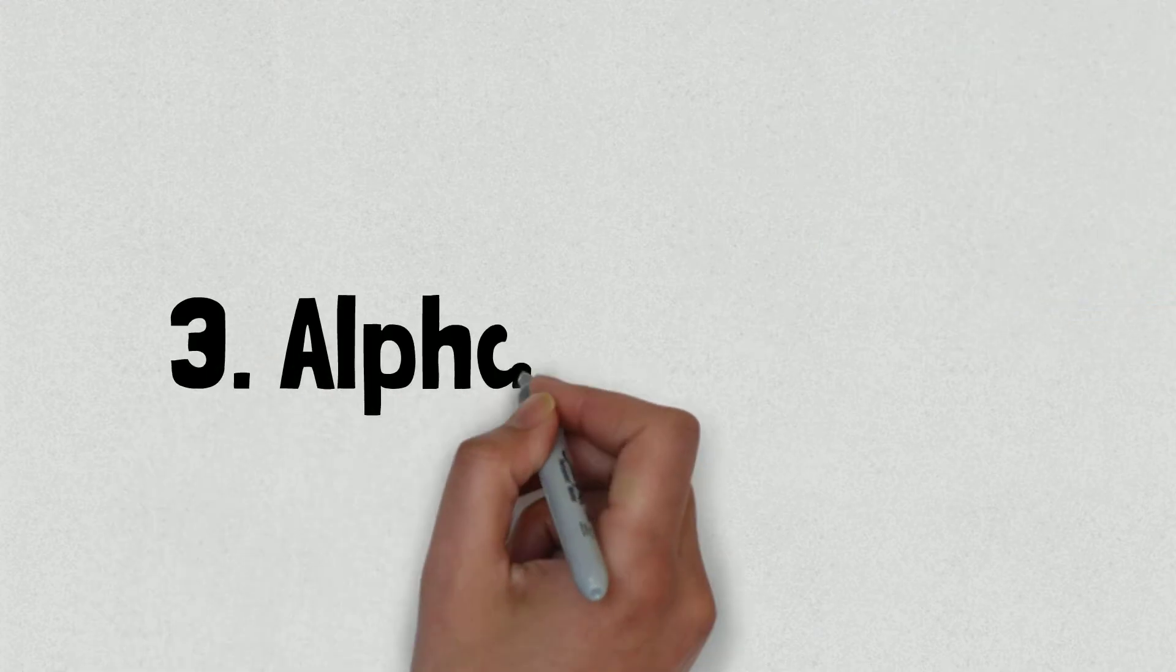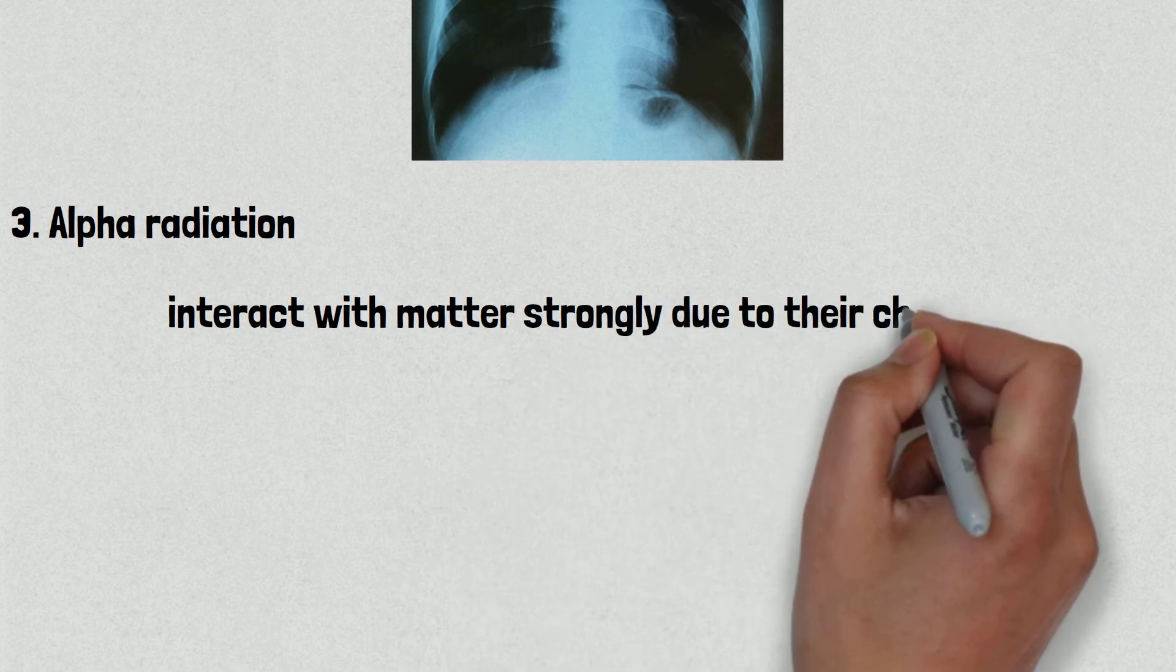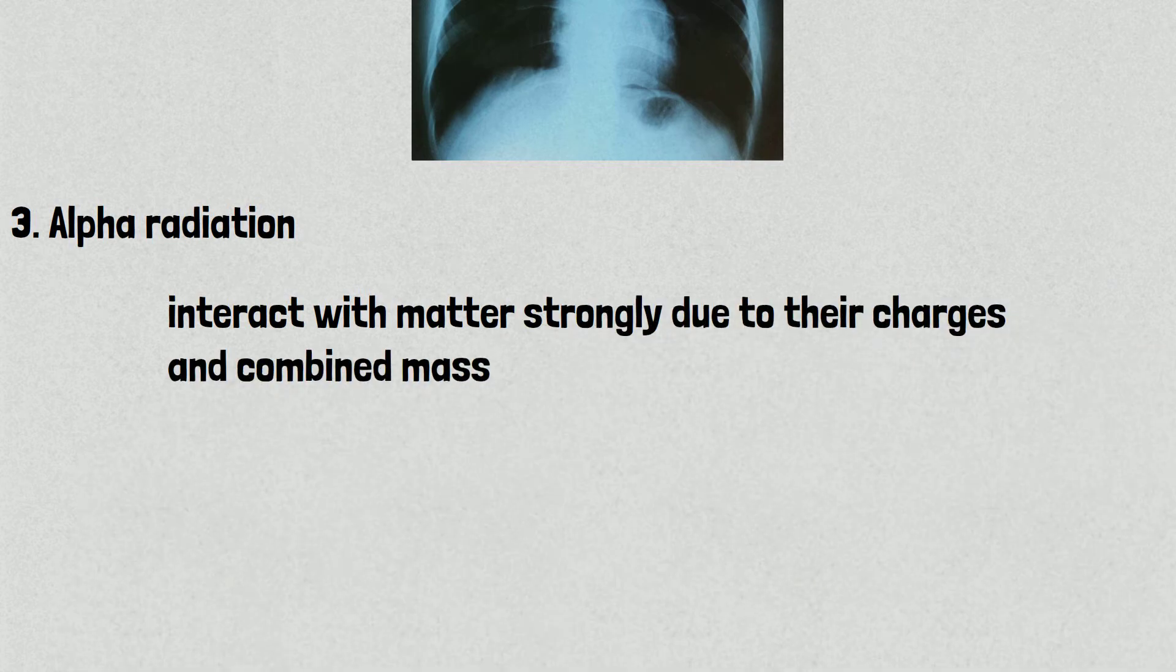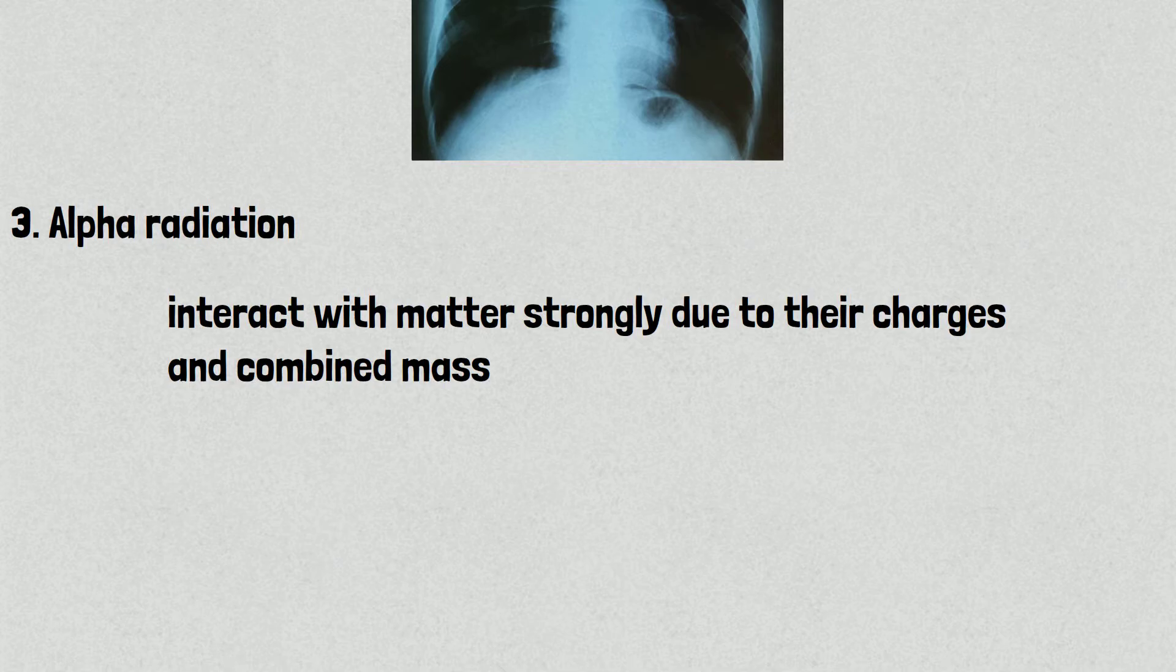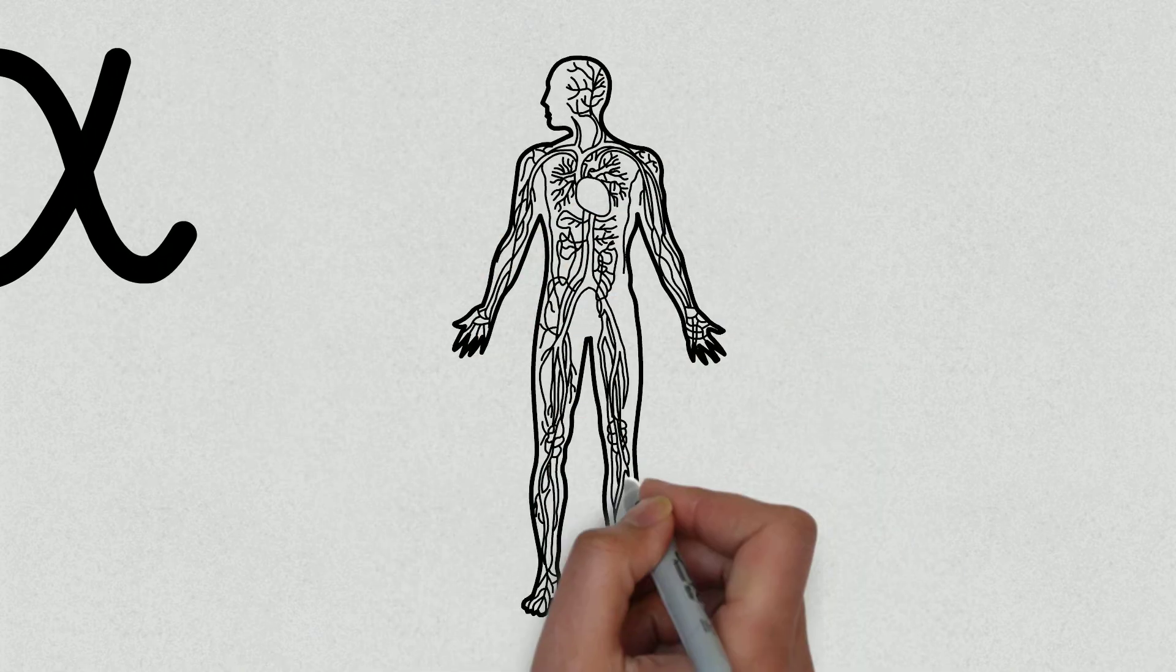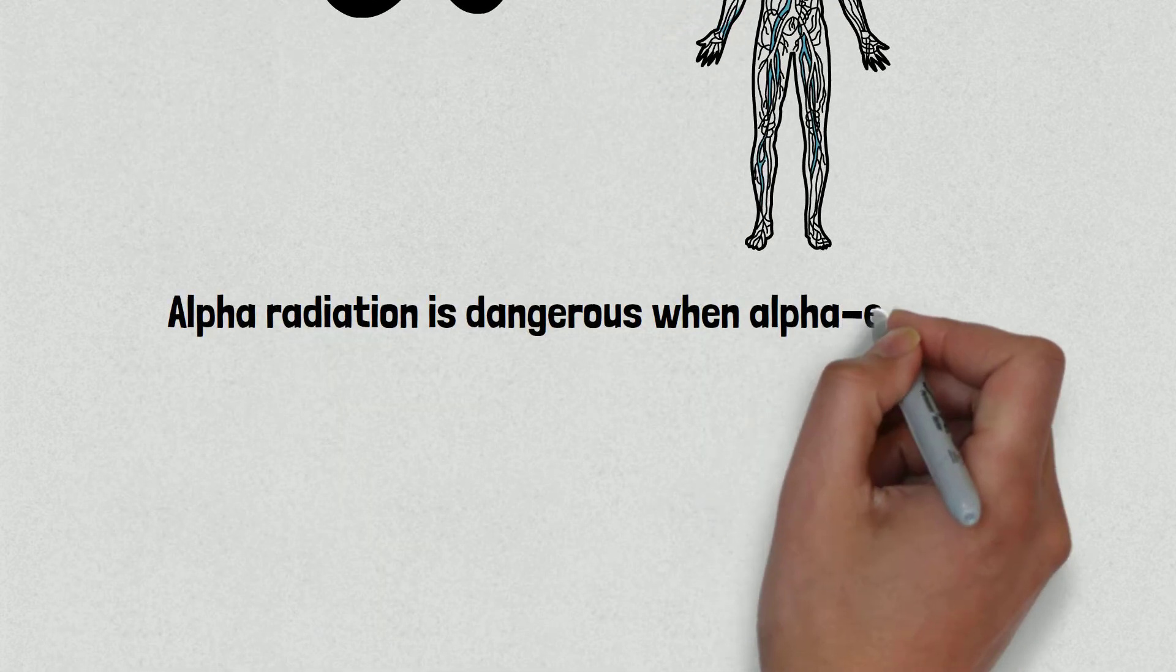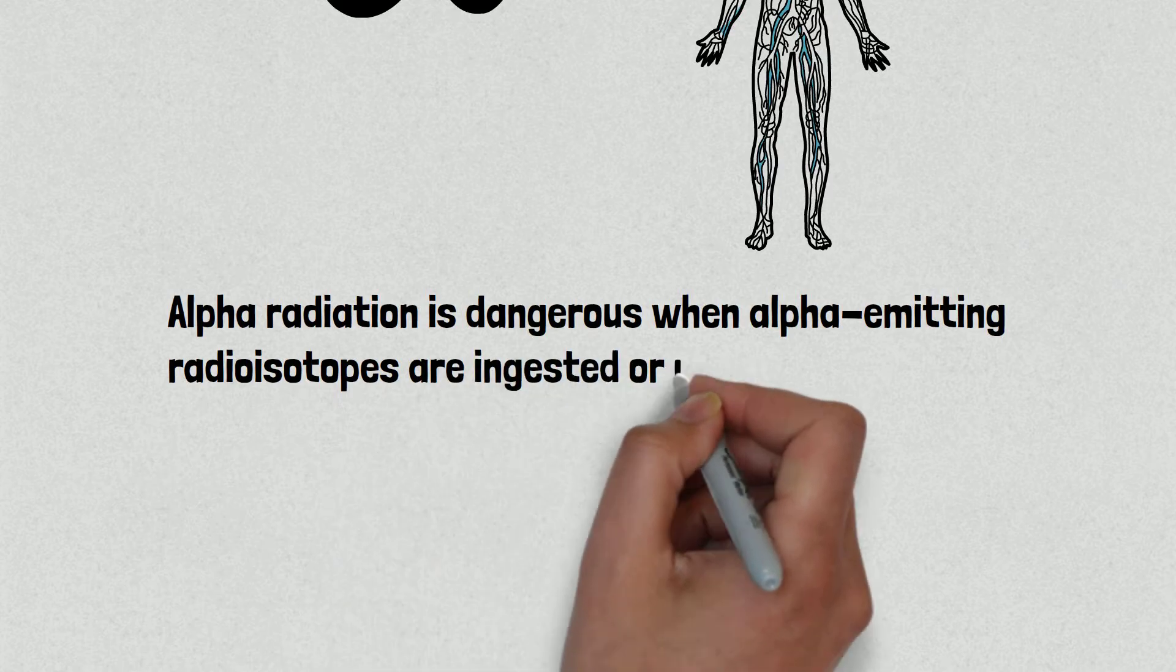Number three is alpha radiation. They interact with matter strongly due to their charges and combined mass, and at their usual velocities only penetrate a few centimeters of air or a few millimeters of low density material. This means that alpha particles from ordinary alpha decay do not penetrate the outer layers of dead skin cells and cause no damage to the live tissues below. Alpha radiation is dangerous when alpha-emitting radioisotopes are ingested or inhaled.